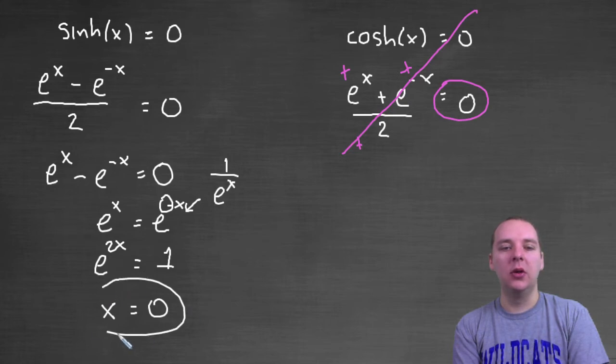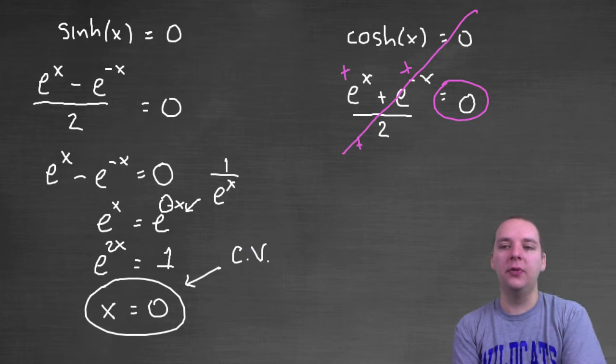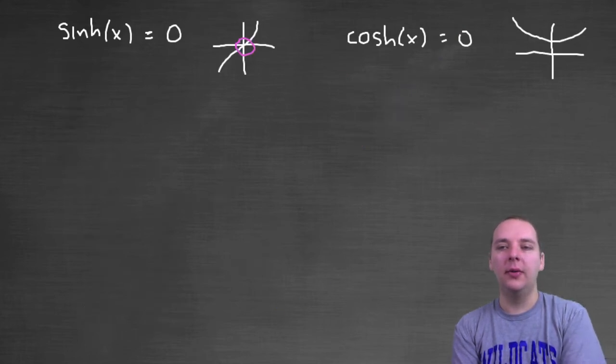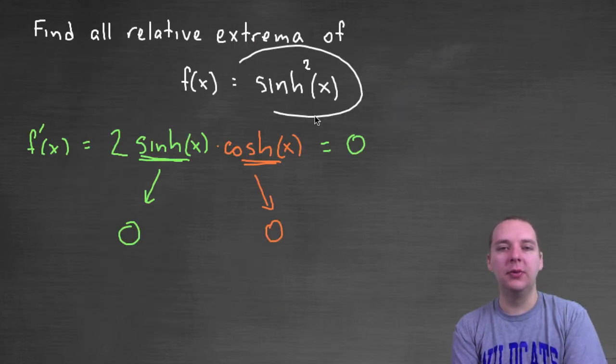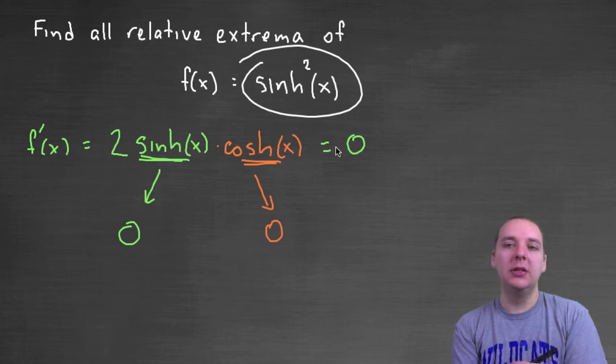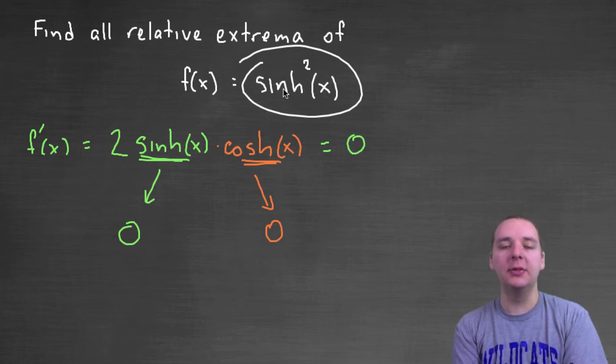This guy is a critical value for this original function. So there's a good chance that this guy is either a maximum or a minimum at this point.